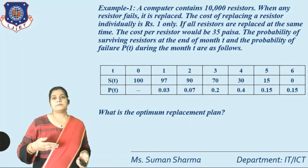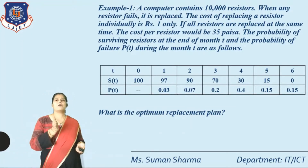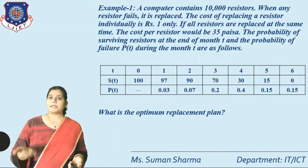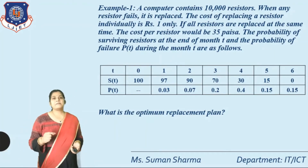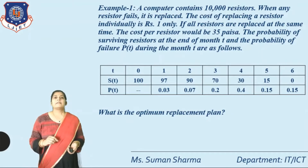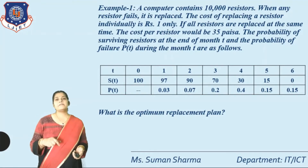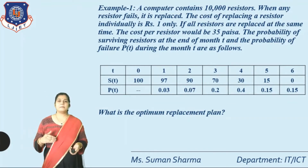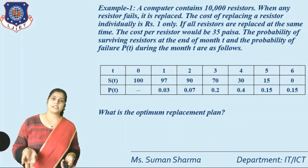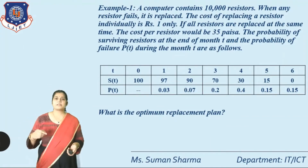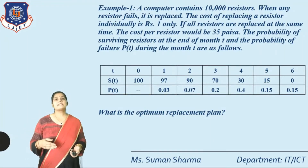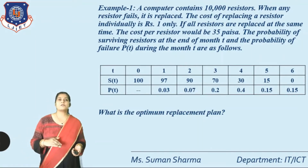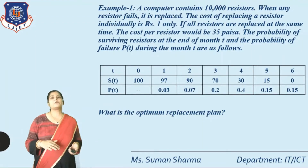Month 0 means from the first day to end of day 13. ST is given as 100, 97, 90, 70, 30, 15, and 0. The probability values are: P1 = 0.03, P2 = 0.07, P3 = 0.2, P4 = 0.4, P5 = 0.15, and P6 = 0.15.